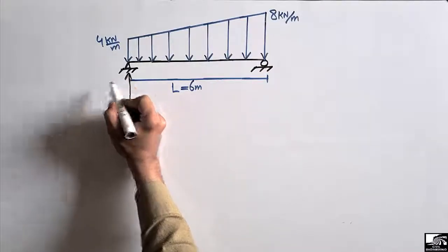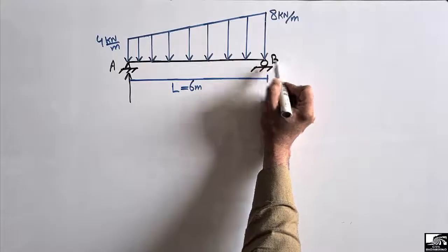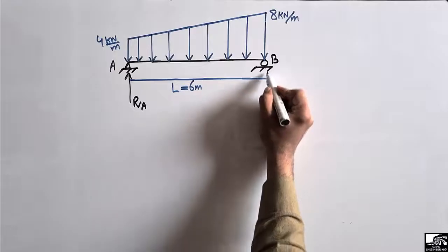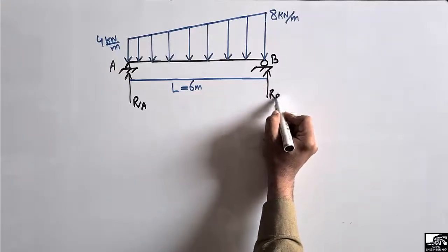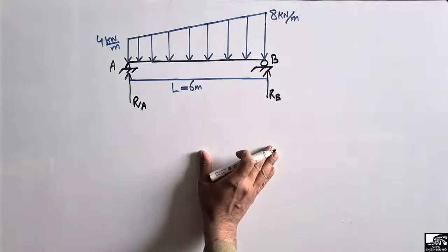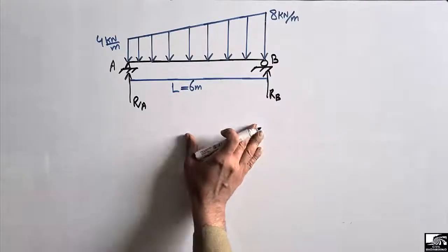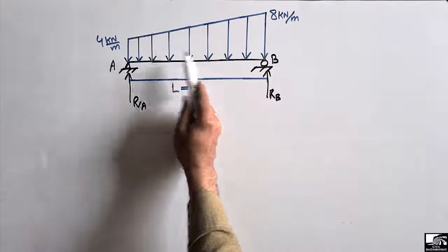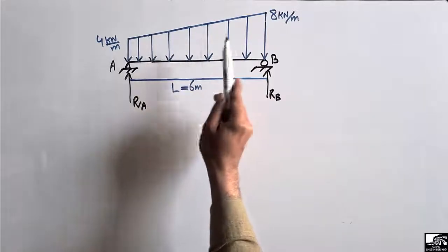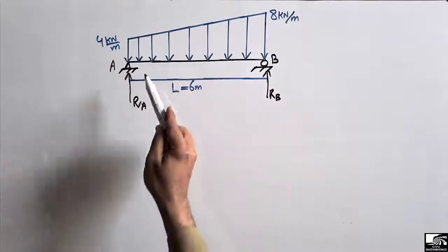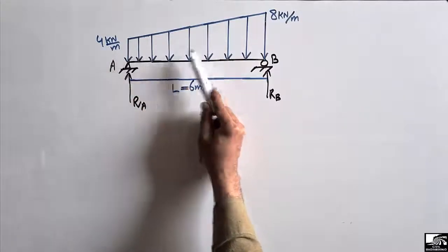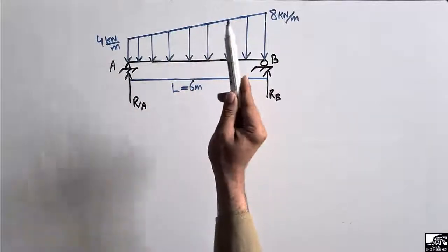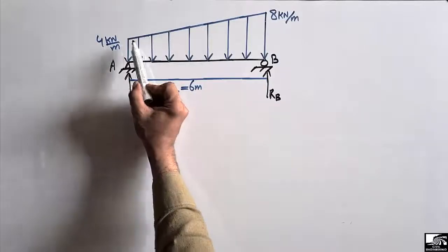Let's suppose this is support A and this is support B, so we are going to find out RA and RB. In order to find the support reactions, first we have to calculate the total amount of load acting on this beam — meaning we have to convert this uniformly varying load into a concentrated load.